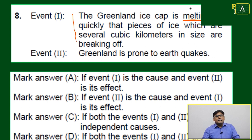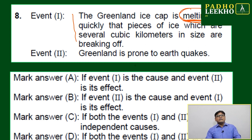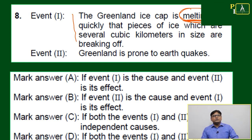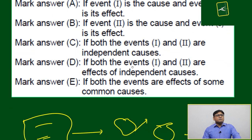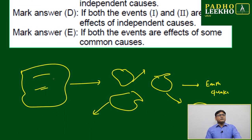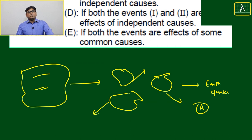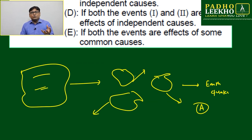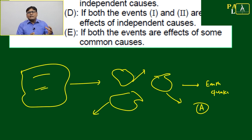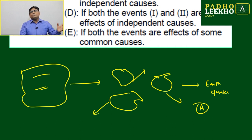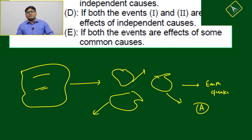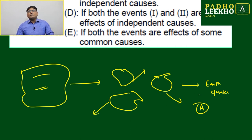But here melting is the initial phenomenon, so event one looks like the cause and event two looks like the effect. Think of it this way: this is the big ice cap, it is breaking into very large pieces — maybe five or ten kilometers long — and those pieces start moving randomly in different directions at high speed. That will trigger the earthquake because imbalancing will happen.